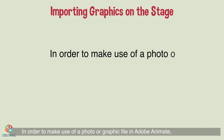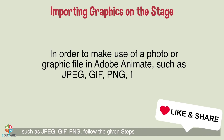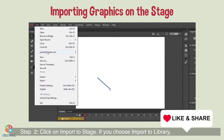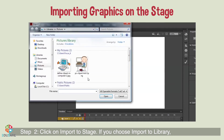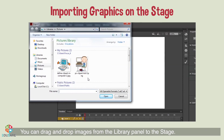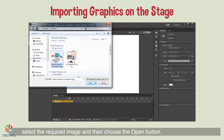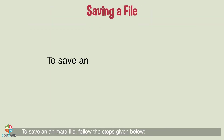Importing graphics on the stage: to use a photo or graphic file in Adobe Animate, such as JPEG, GIF, or PNG, follow these steps. Step 1: click on File and choose Import. Step 2: click on Import to Stage. If you choose Import to Library, the image will be saved in the Library panel — you can drag and drop images from there to the stage. Step 3: the Import dialog box will appear; browse and select the required image, then click the Open button. The image will be imported to the stage.